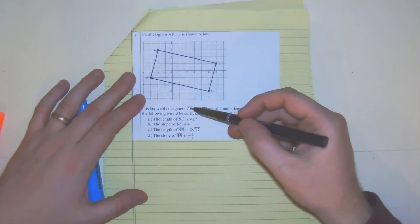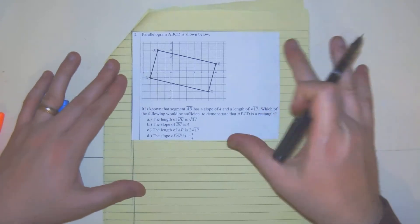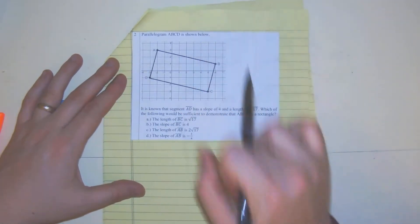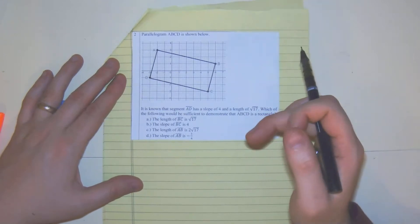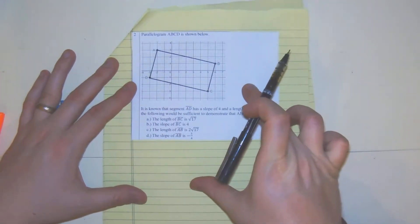It is known that segment AD has a slope of four and a length of 17. So this is on the computer again. This right here is not important necessarily with the numbers. We just want to have something in front of us, so draw it.